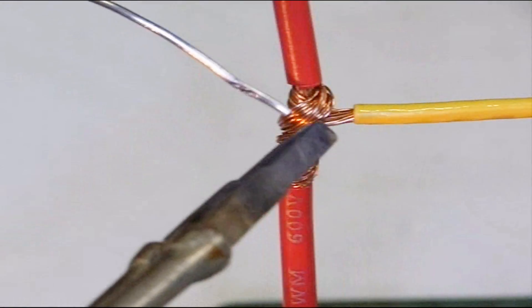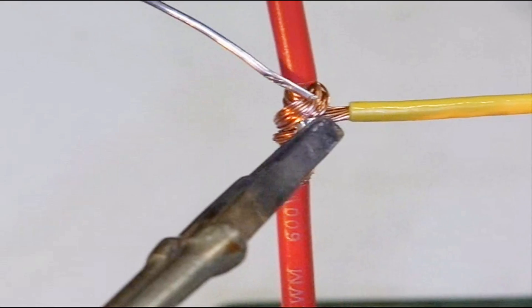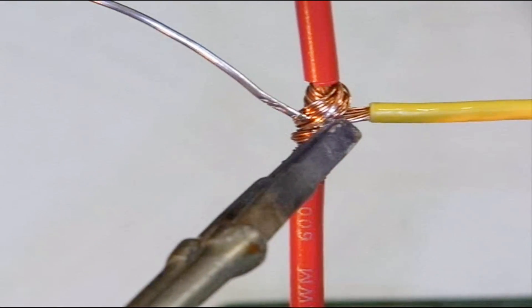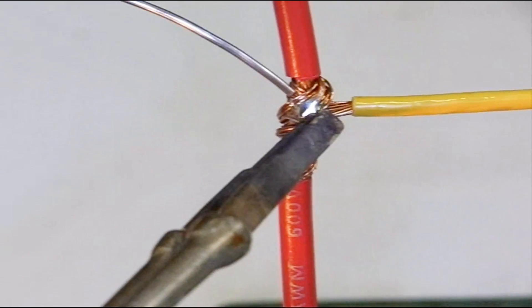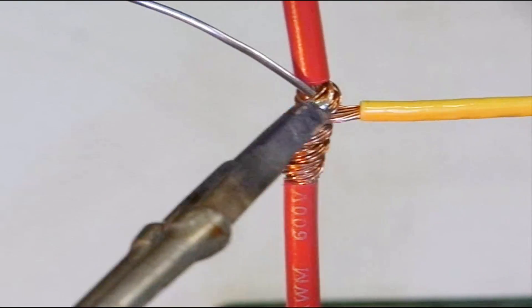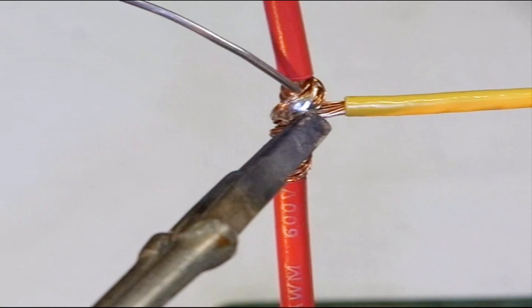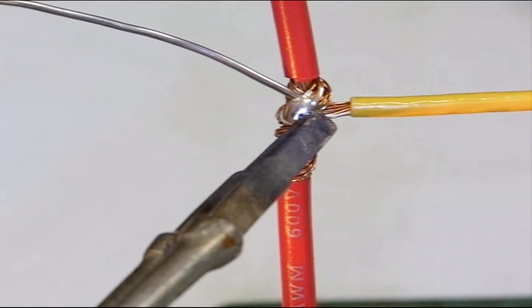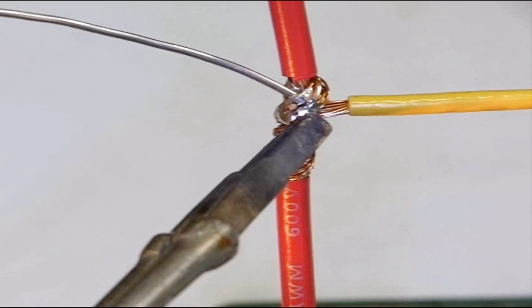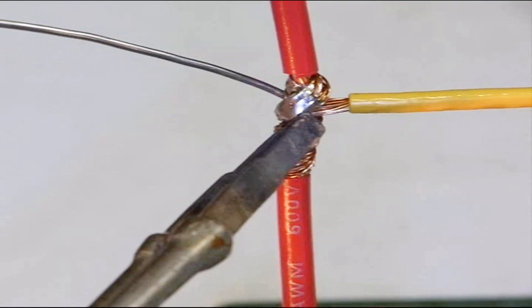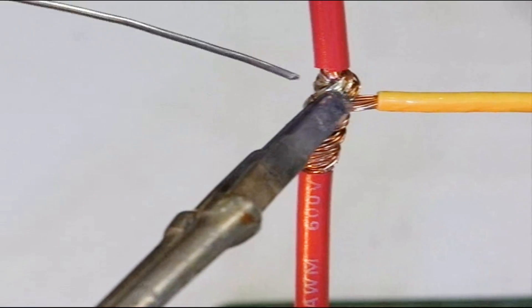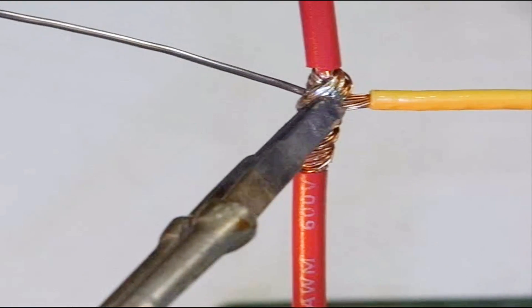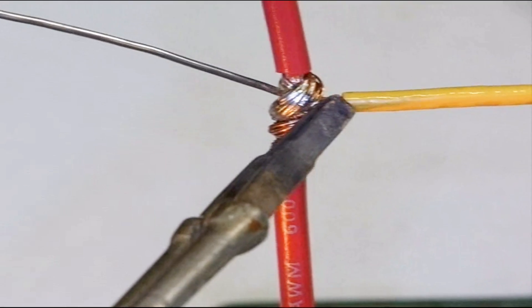This is going to take a lot of solder. With our tip, get some heat transfer going. Get the solder flowing into the joint. There we go. Starting to wet. Let's go ahead and get some heat transfer.